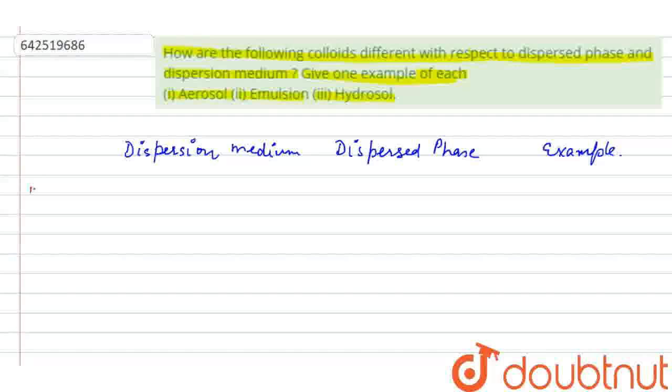The first one is aerosol. For aerosol, we will talk about the dispersed phase. Dispersed phase is where the particles are scattered in the dispersion medium.